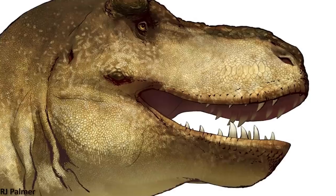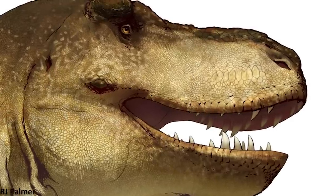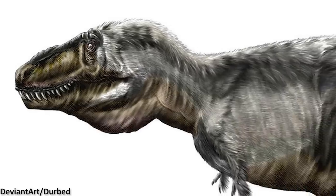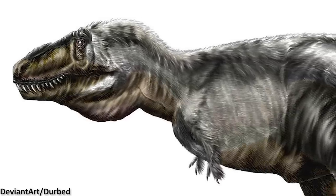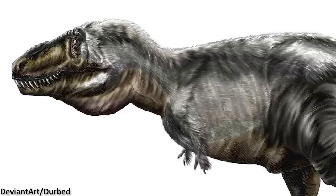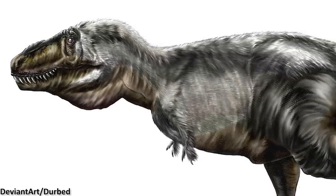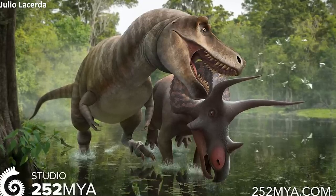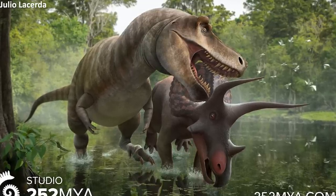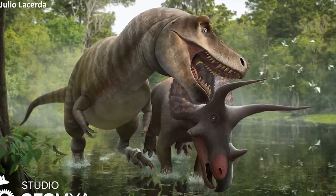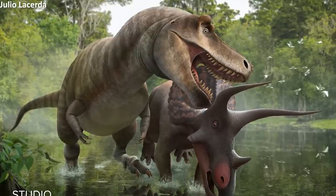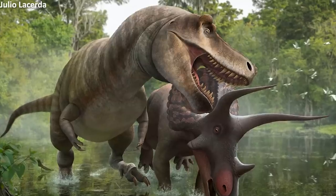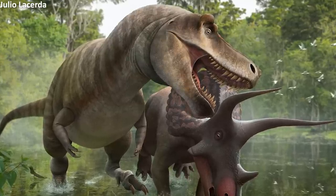First of all, what are the arguments against lips? One of the main contentions against the presence of lips in extinct dinosaurs concerns the phylogenetic bracket. Phylogenetic bracketing is a method used by paleontologists when they wish to determine how likely it is that a certain character was present in an extinct organism by looking at its living relatives.